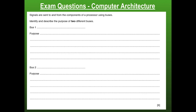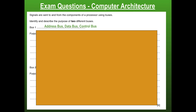Computer architecture. Signals are sent to and from the components of a processor using buses. So we're looking at the fetch-execute cycle because it mentions the buses connecting components inside the processor. I'm going to identify and describe the purpose of two different buses. There are three buses: the address bus, the data bus, and the control bus. This is a six-mark question — you get one mark for naming each bus and then two marks for describing the purpose.